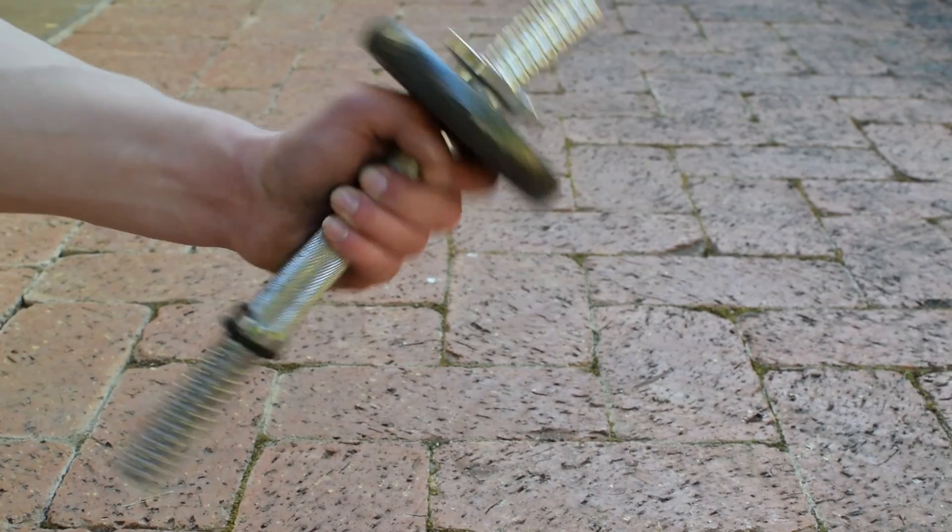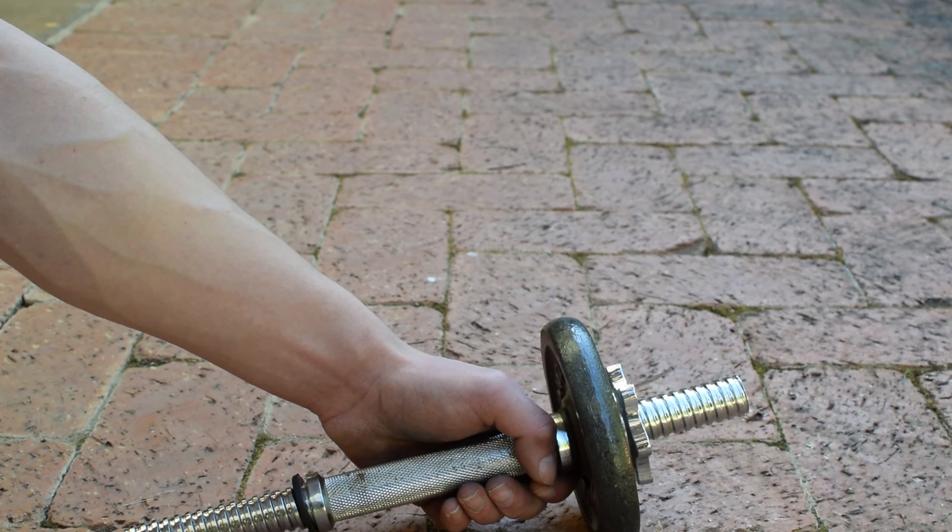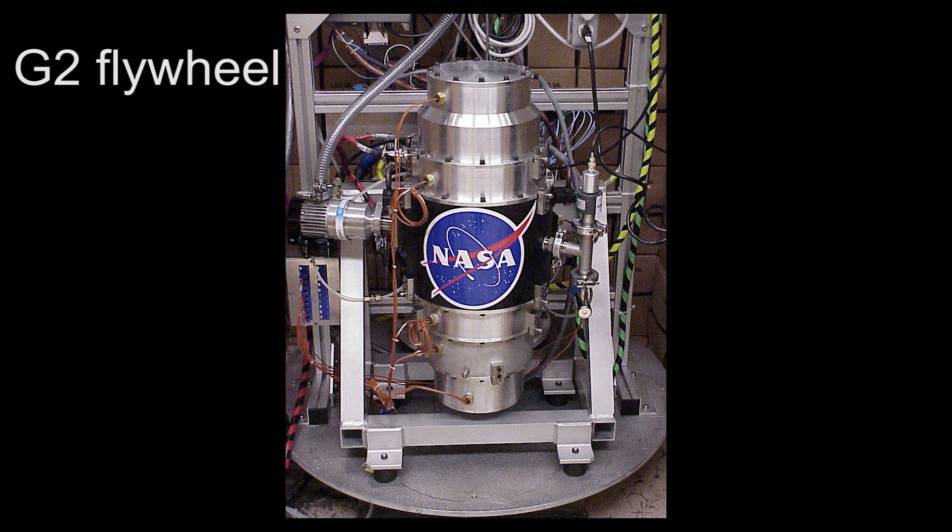Mass distributed away from the centre of rotation requires more energy to rotate. One of the real world applications for moment of inertia is a flywheel. Flywheels are designed to store energy as rotational energy. Rotational energy is a half multiplied by the moment of inertia, multiplied by the angular velocity squared.